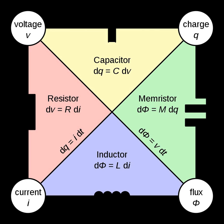Electrical elements are conceptual abstractions representing idealized electrical components, such as resistors, capacitors, and inductors, used in the analysis of electrical networks. All electrical networks can be analyzed as multiple electrical elements interconnected by wires. Where the elements roughly correspond to real components, the representation can be in the form of a schematic diagram or circuit diagram. This is called a lumped element circuit model.